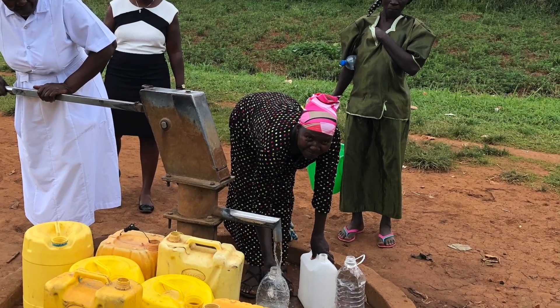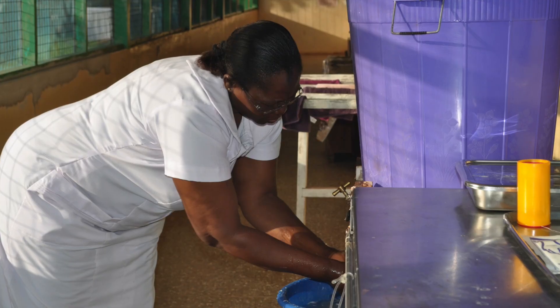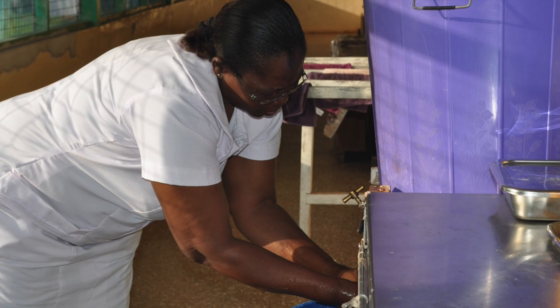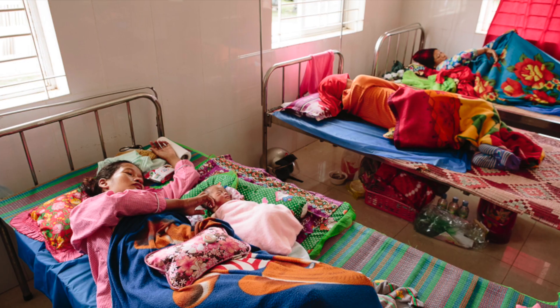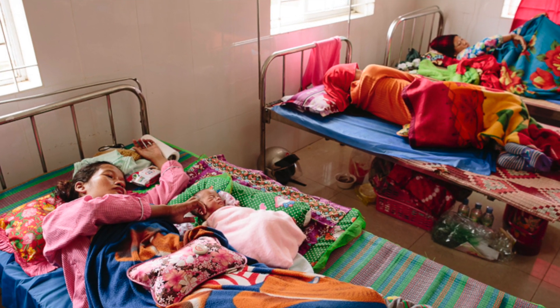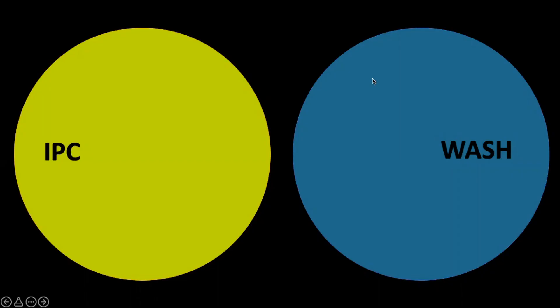Water, sanitation and hygiene and infection prevention and control are both necessary for the delivery of safe, quality health care services. But how do they interact within the health care setting?